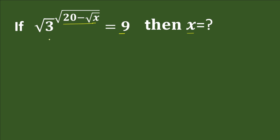Now let's solve the equation. One condition is there: x is under a square root, so the value of x should be greater than or equal to 0. Anything under a square root, for a real value, it should be greater than or equal to 0.